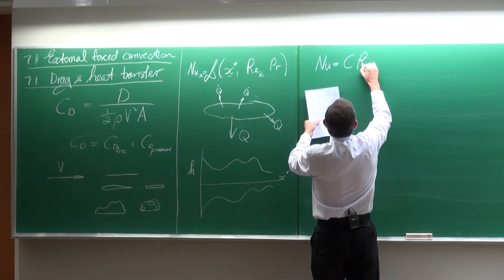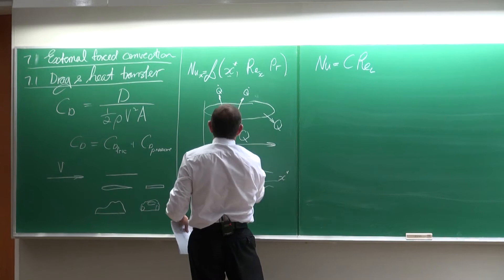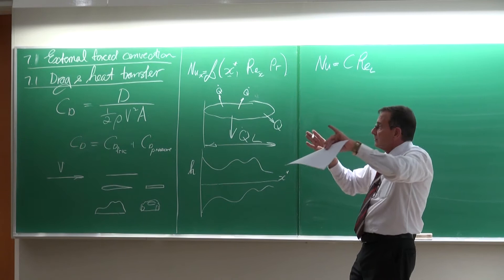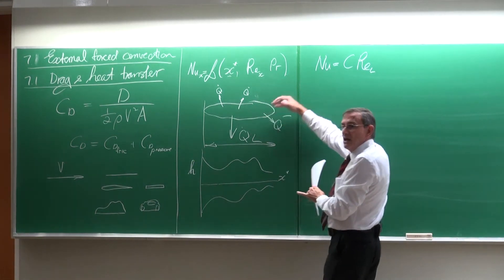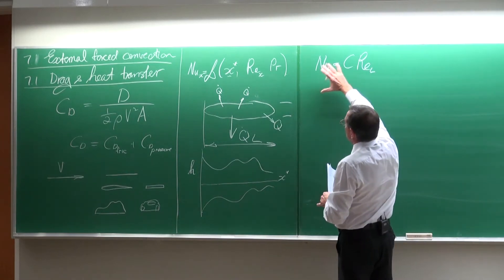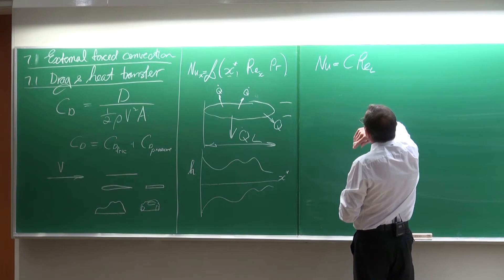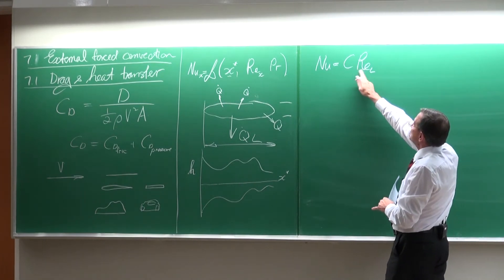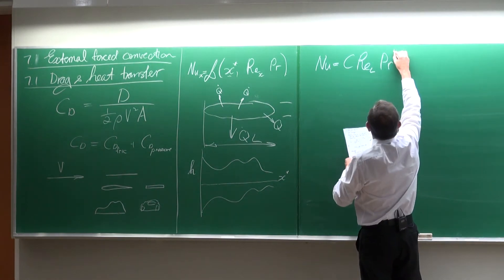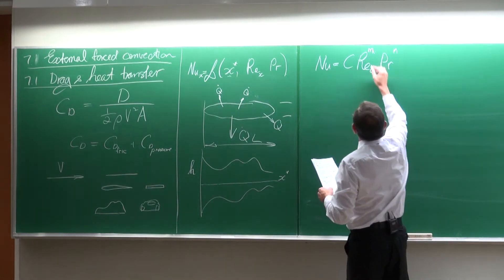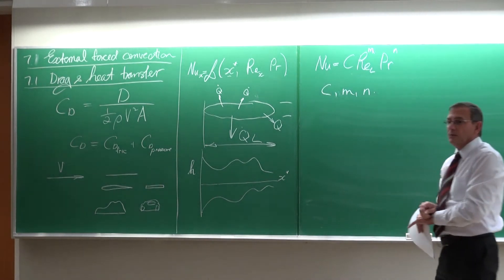The average Nusselt number is written as a function of the Reynolds number based on a characteristic length, which could be the length, a projected length, the width, or even the height. Normally people doing the experiments do all the integration for us, so we end up with an equation: Nu = C × Re_L^M × Pr^N, where M, N, and C are obtained from tables or graphs.